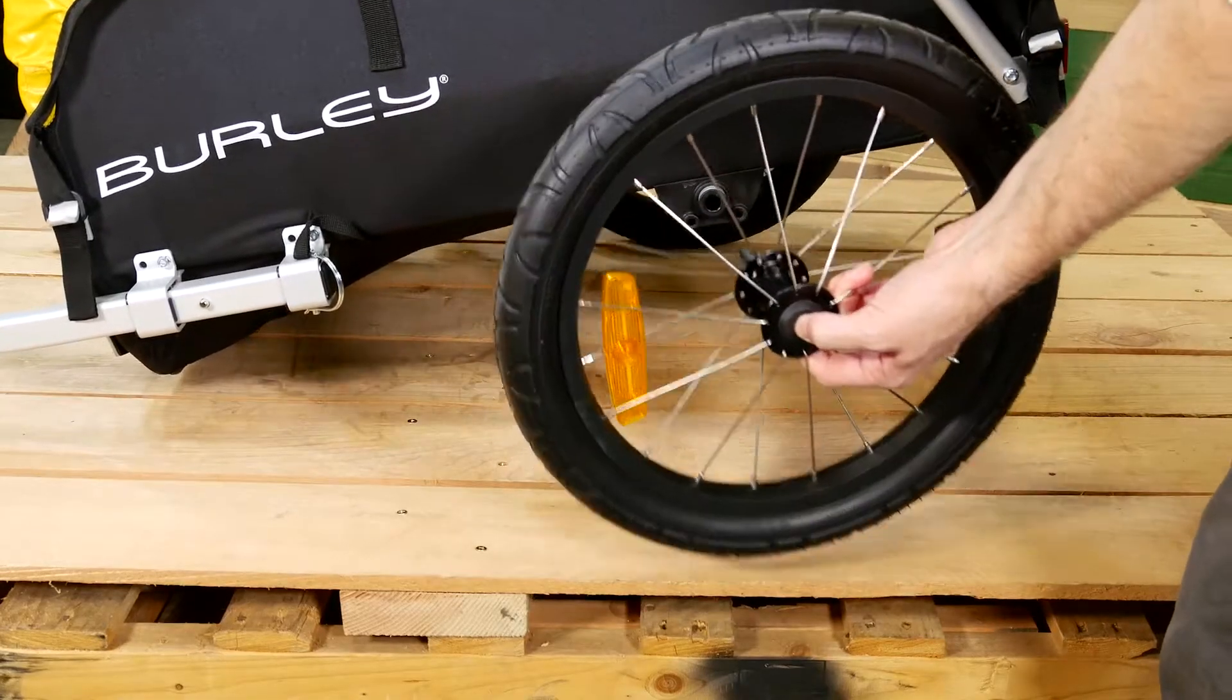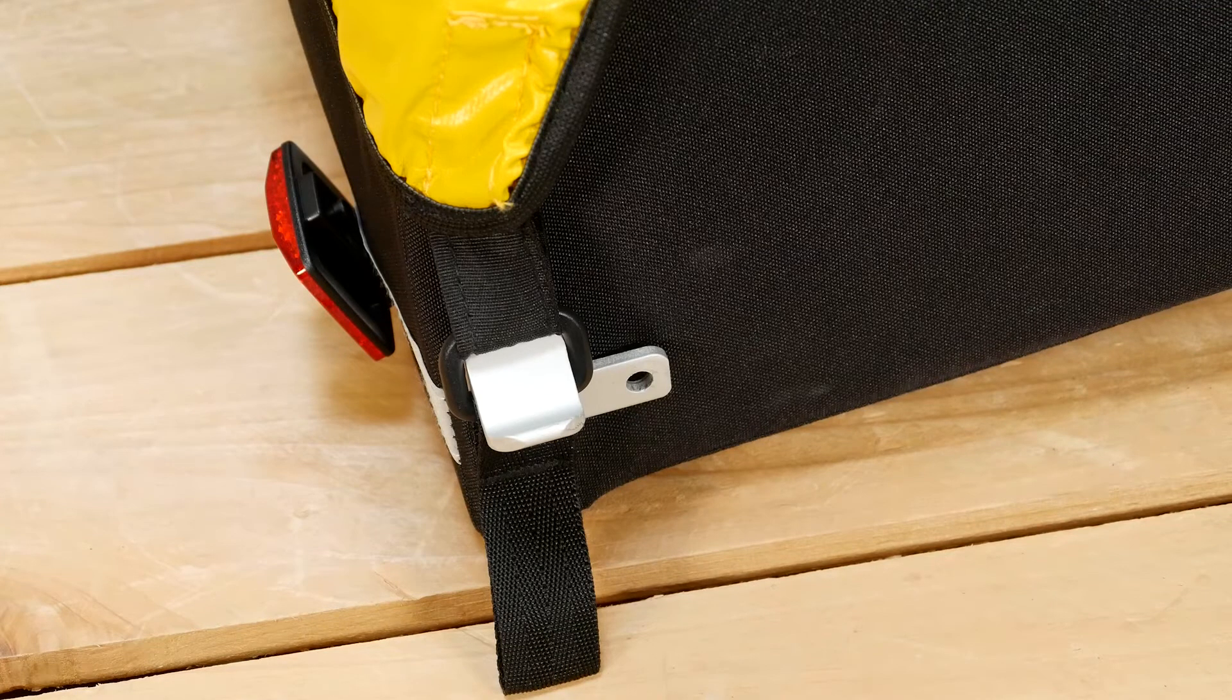Now remove the wheels. The struts of the rack will be placed over the empty holes on the mounts in the rear of the trailer.